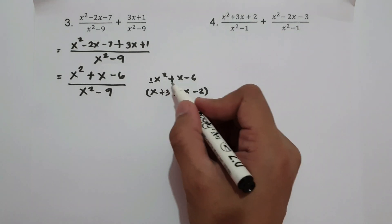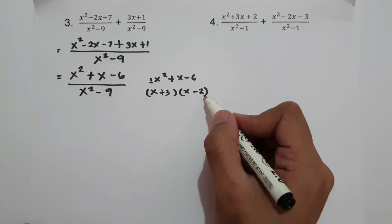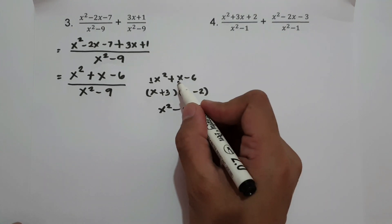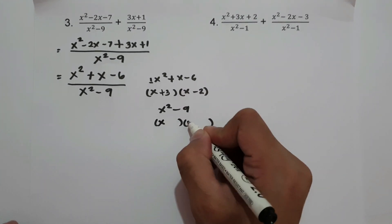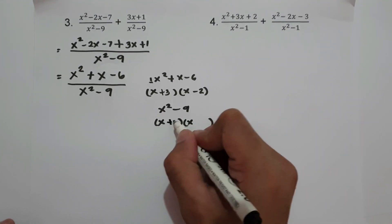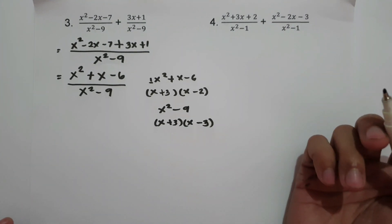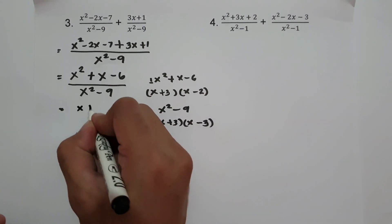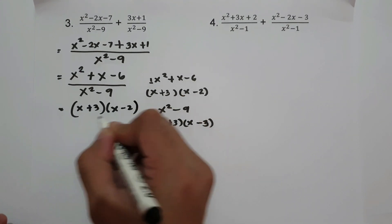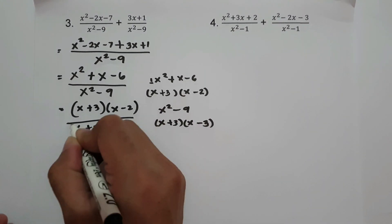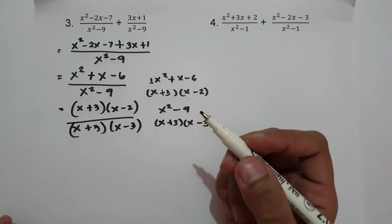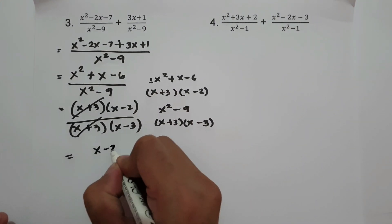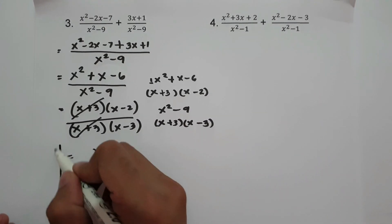So the factors of x squared plus x minus 6 are (x plus 3) and (x minus 2). For x squared minus 9, there is no linear term, so the factors are (x plus 3) and (x minus 3). Writing this out: (x plus 3)(x minus 2) over (x plus 3)(x minus 3). We can cancel (x plus 3). Therefore, our final answer is (x minus 2) over (x minus 3).